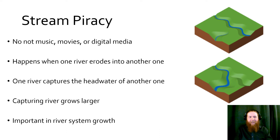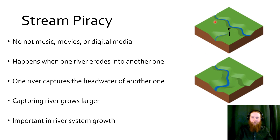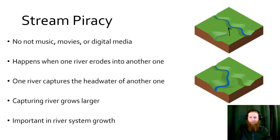Stream piracy — and this is not about music, movies, or digital media. This happens when one river erodes upstream into another and steals its water. Through headward erosion, a small stream continues to erode upward until it reaches the channel of another river, which then has a steeper path of least resistance. The smaller stream becomes one river with the other, having pirated that water flow. This is important as river systems grow larger — the more streams they pirate, the more water they get.